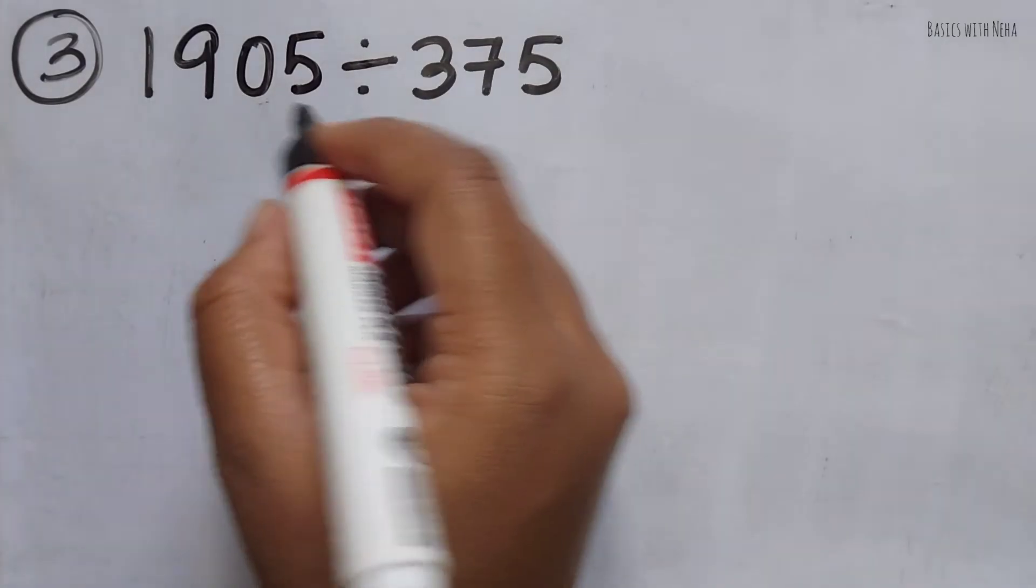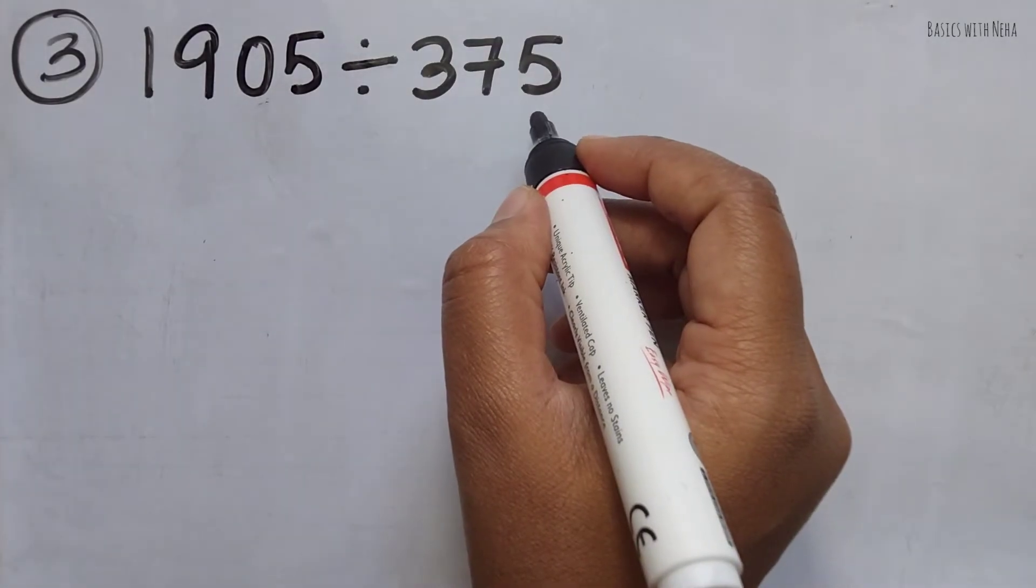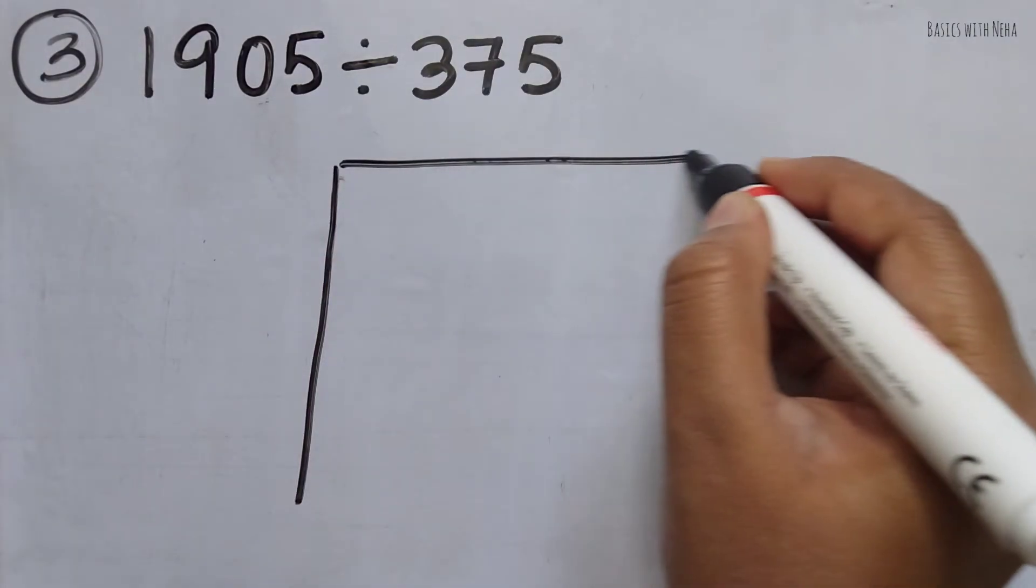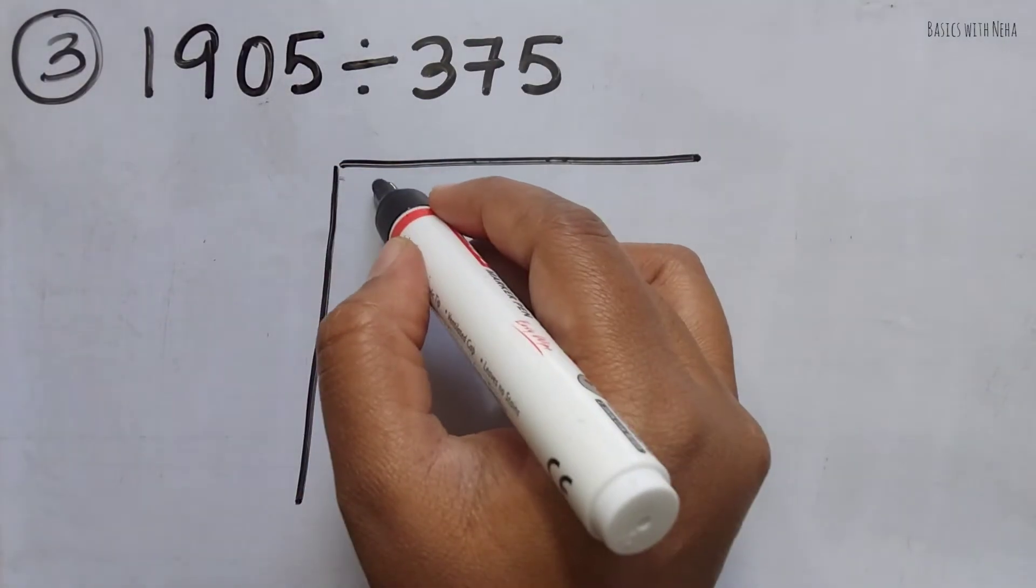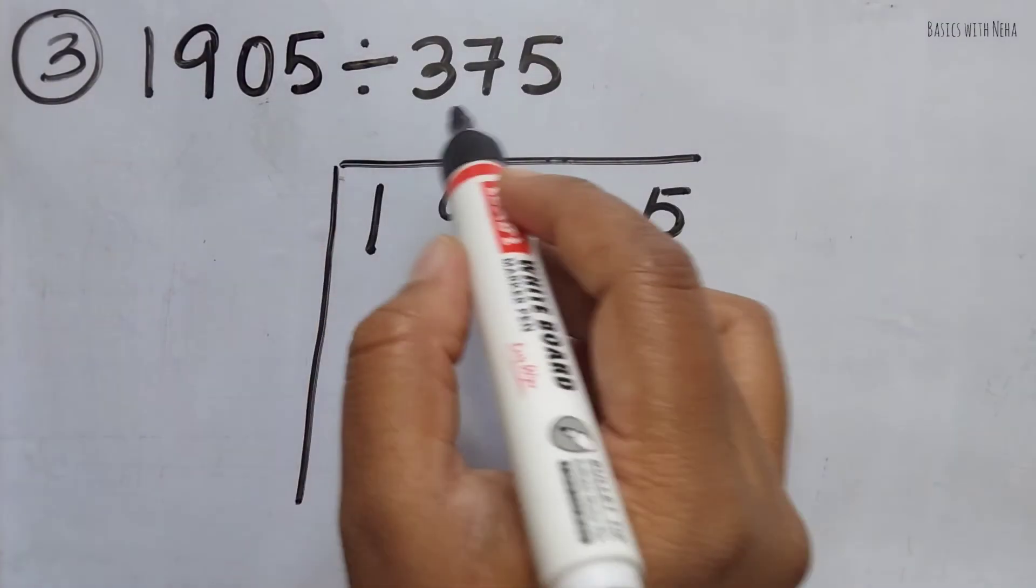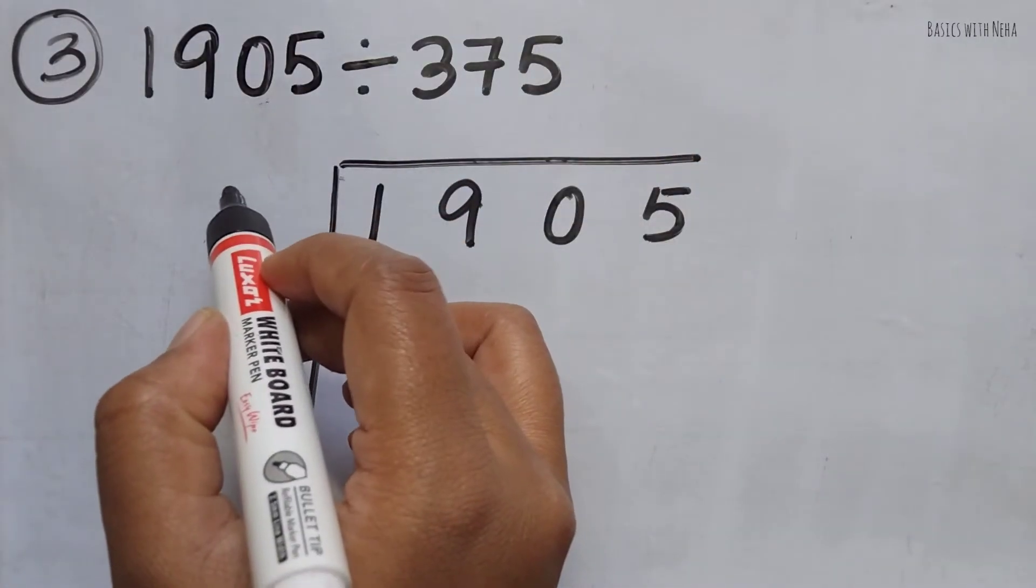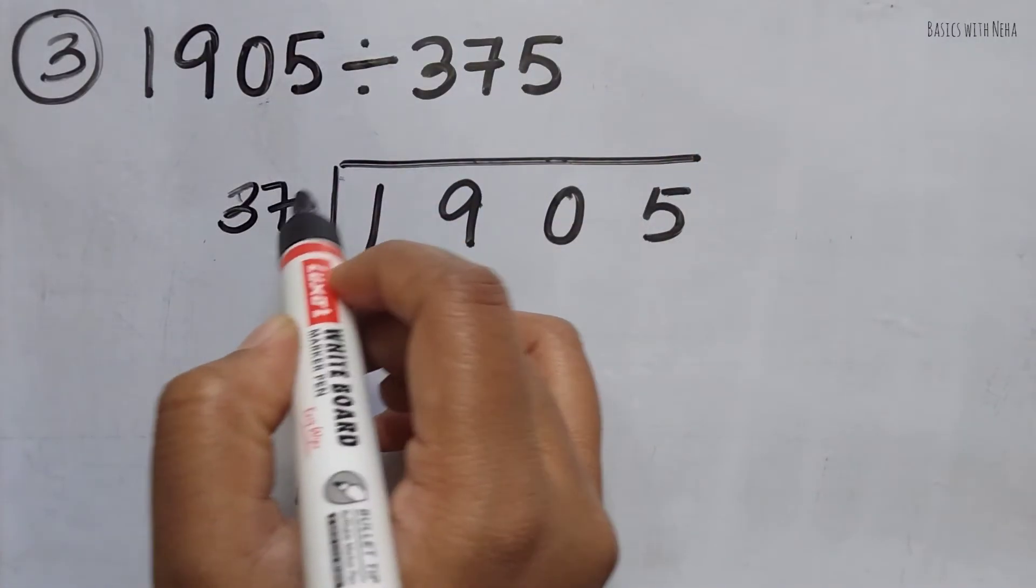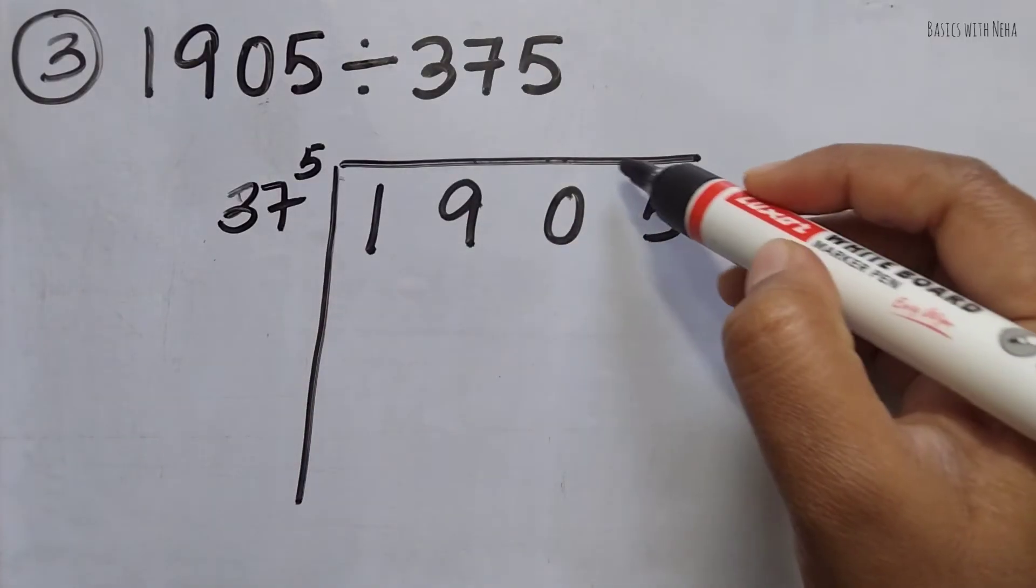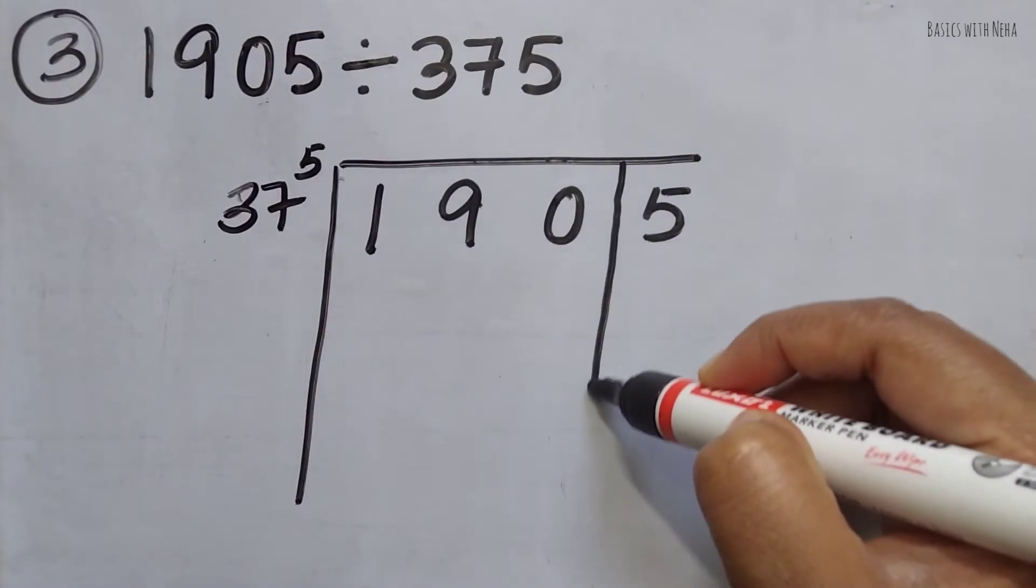The third sum: 1905 divided by 375. We are going to write it the same way. It is 1905, and I'm still going to take 1 in the Dvajanka. So it will be 37 to the power 5. Since I have 1 Dvajanka, I'm going to leave 1 number on the right-hand side and put a split.